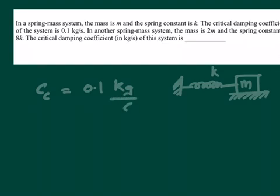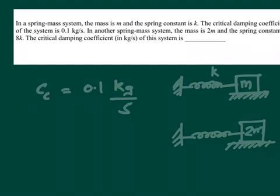In another spring-mass system, this was case one. In another spring-mass system, the mass is 2m and the spring constant is 8k. They are asking what is the critical damping coefficient of this particular system. This is a very simple problem.